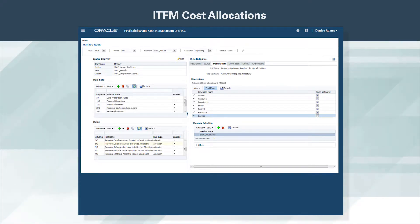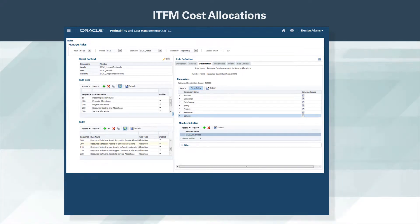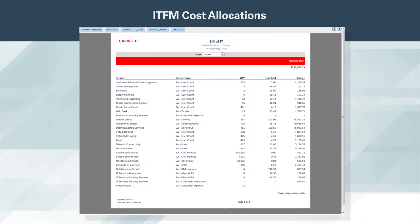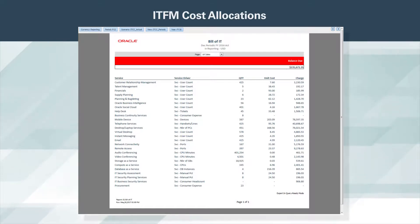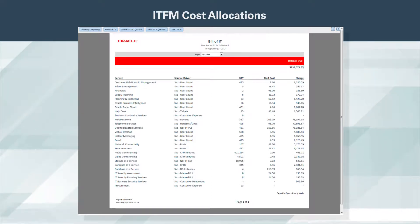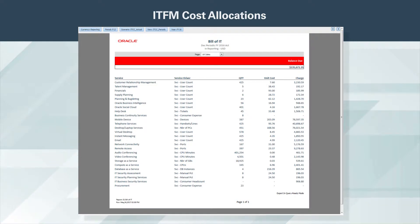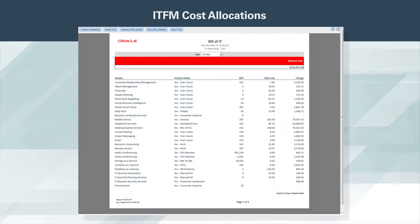Let's take a look at a few examples. Our UK sales director reviews her December bill of IT statement. For each line item, she can see the service being provided, the driver metric used for billing, and how the charge per line item is derived. It is evident the IT costs attributed to her team are relevant and supportive of their day-to-day business.